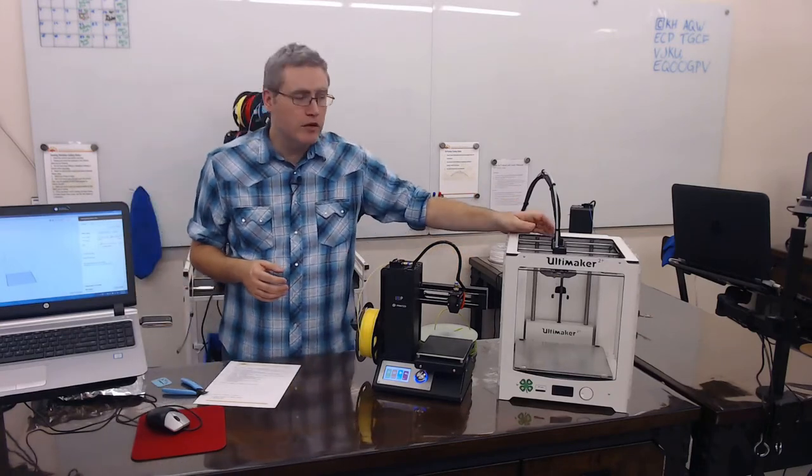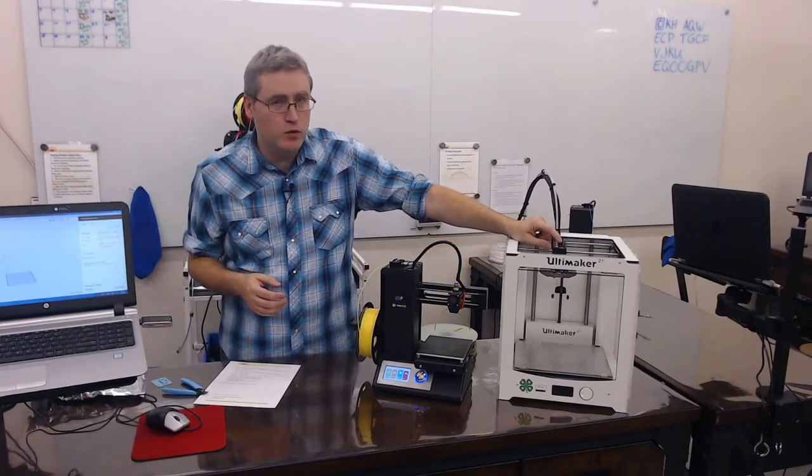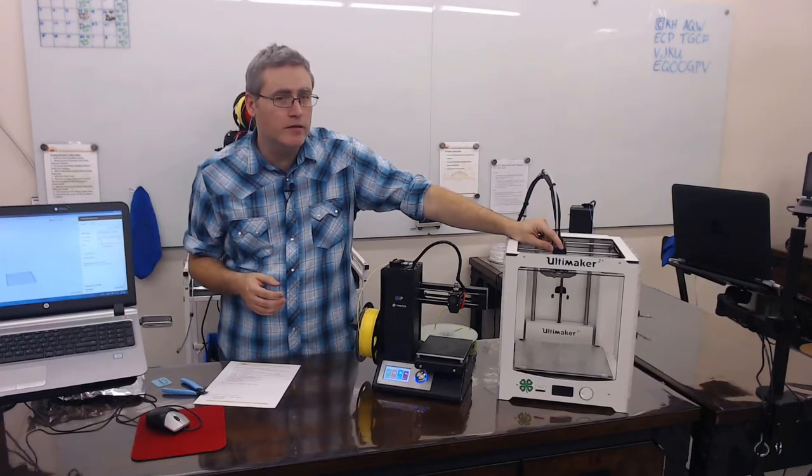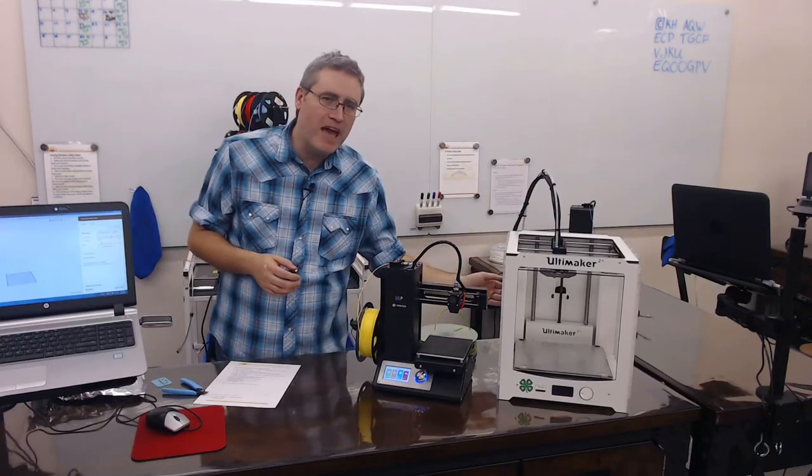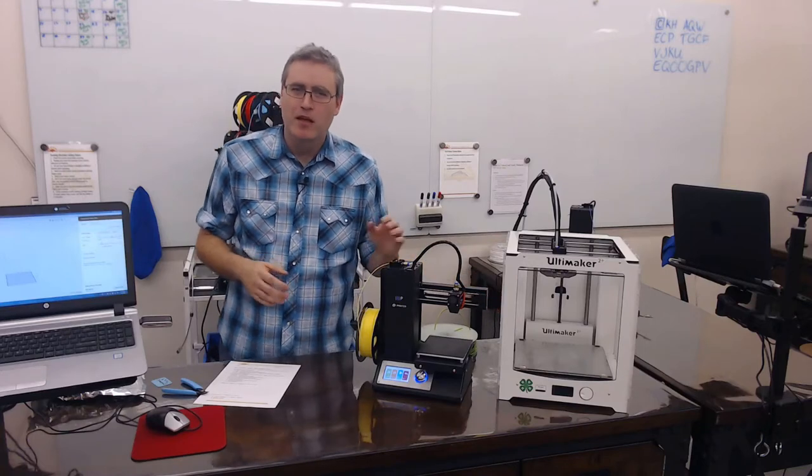However, on the Ultimaker here you might think that the motor is right here next to the hotend, but it's not. It's here on the back, hidden away where you can't really see it. Some 3D printers do have their feed system much closer to the nozzles, but they all have one and that's the point.